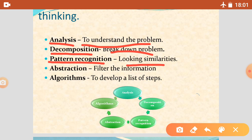Next is abstraction. In abstraction, we filter the information which is important for us — the important information that will help solve our problem. We filter out what is relevant and leave the rest. This is known as abstraction.